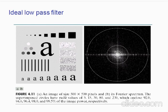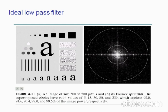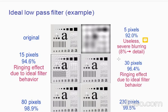Here is an application of an ideal low pass filter. There is an image of size 500 by 500 pixels and this is the Fourier spectrum. The superimposed circles have radii values of 5, 15, 30, 80, and 230. These circles are capturing the image power or energy inside them. Most of the energy lies in the very small circle, with some more energy in the larger circles.